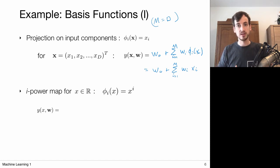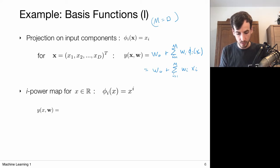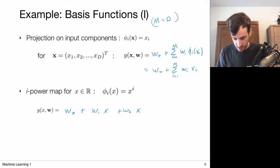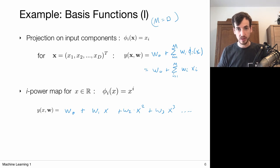Now let's consider the basis functions to be these power maps — the i-th basis function takes X to the power i. That would give us: bias term plus W1 times X to the power 1, plus W2 times X to the power 2, plus W3 times X to the power 3, et cetera. So if we choose the basis functions to be these power maps, we get a polynomial regression problem.